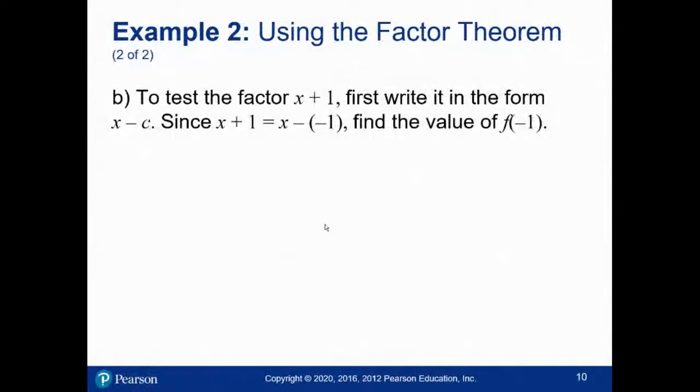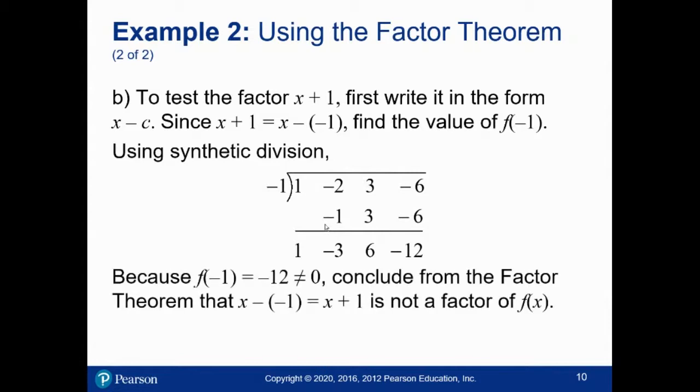For part b, x plus 1 was what we were trying to test. That means I need to plug in f of negative 1. You could do the division. Alternately, you can just compute f of negative 1 from the original version of the function and not get 0. Since f of negative 1 isn't 0, x plus 1 is not a factor.